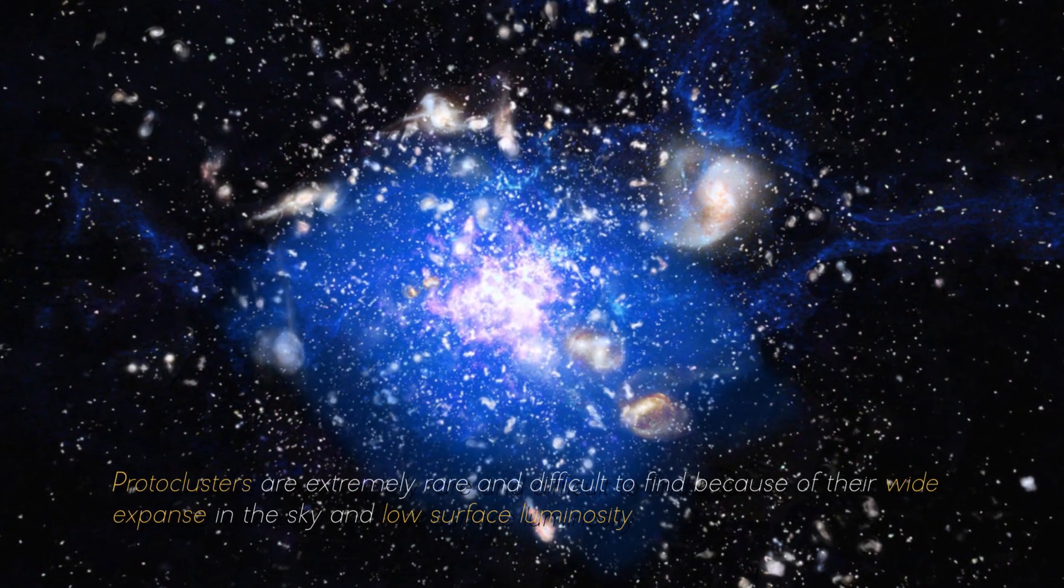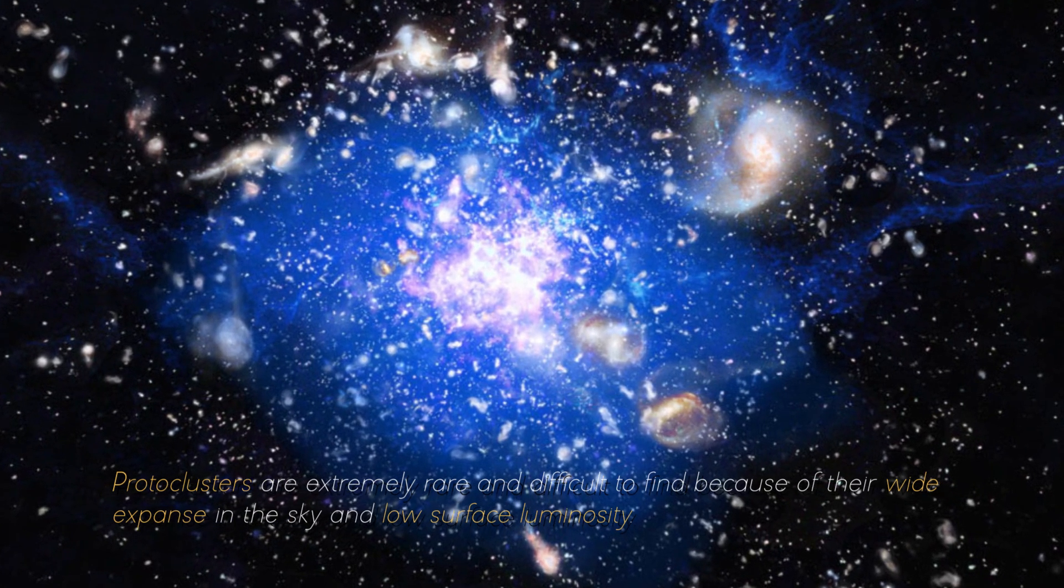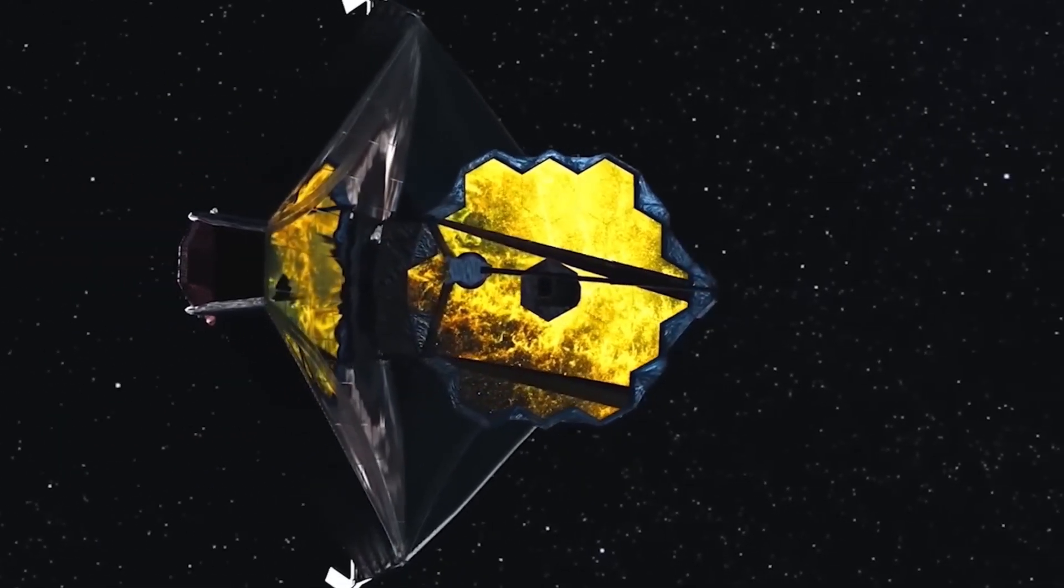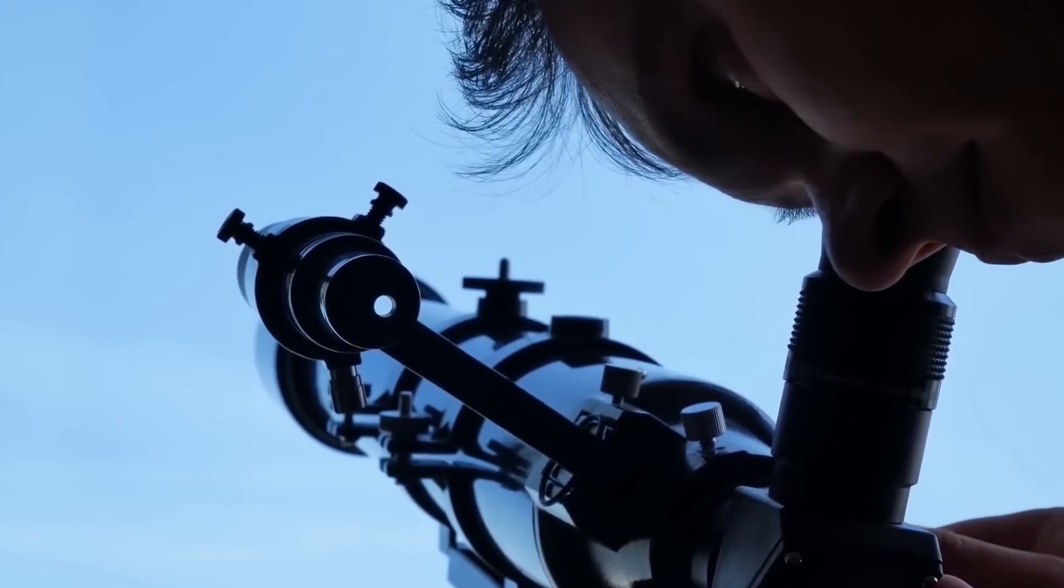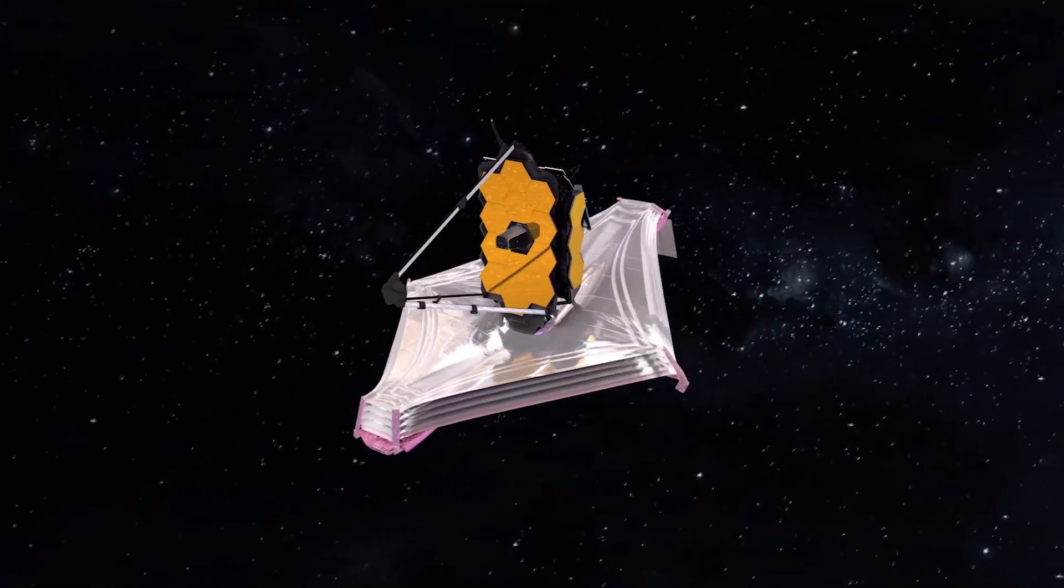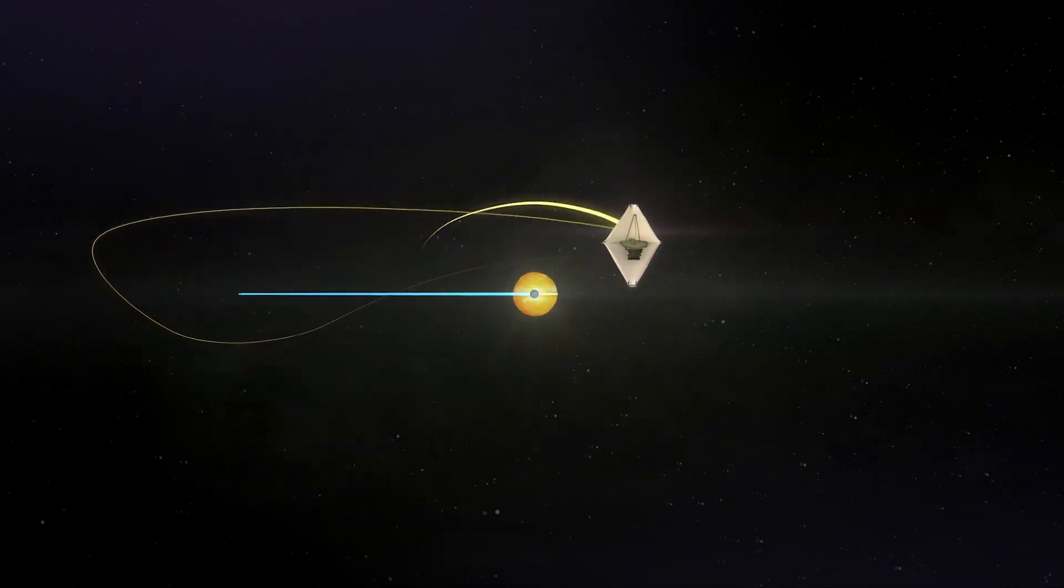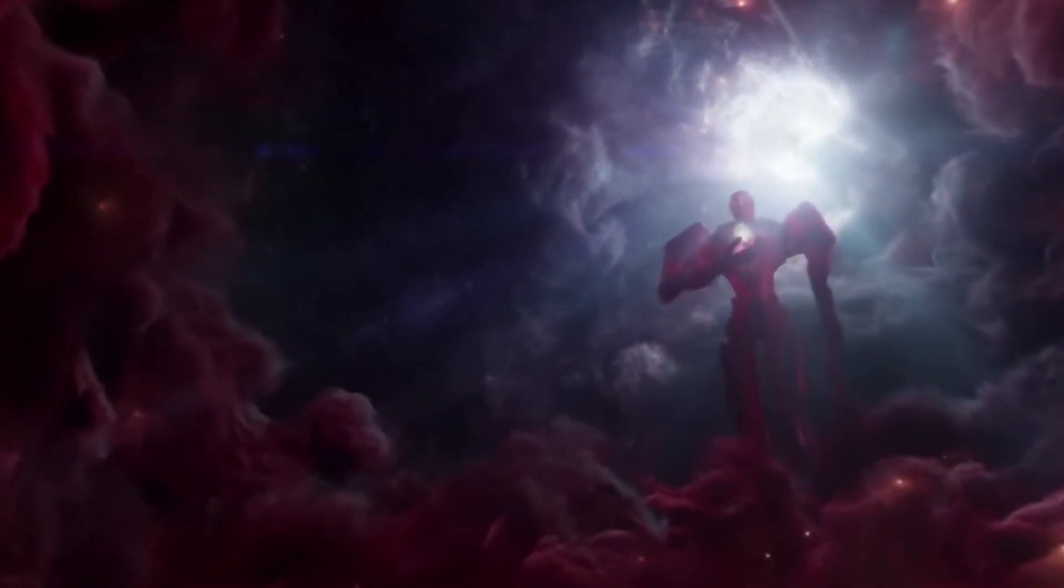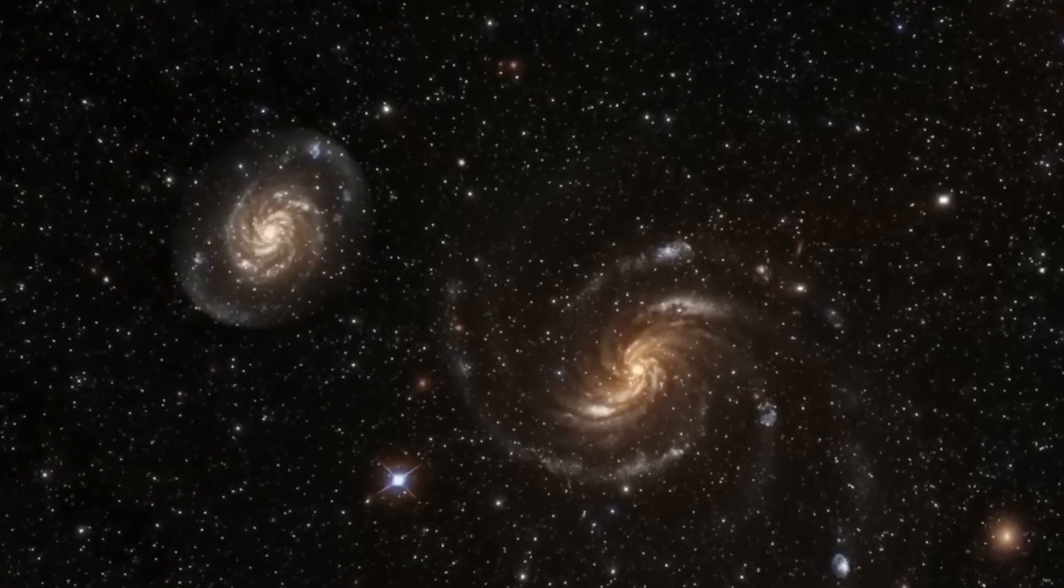Protoclusters are extremely rare and difficult to find because of their wide expanse in the sky and low surface luminosity. However, the James Webb Space Telescope's wide-field, high-sensitivity cameras will make it possible to detect hundreds of galaxies in a single observation, covering a significant portion of the sky with unprecedented depth and detail that has never been observed before. Astronomers have the ability to identify protoclusters by analyzing galaxy density, spectral properties, and velocity dispersions. To do this, they combine data from the James Webb Space Telescope with other observatory surveys.